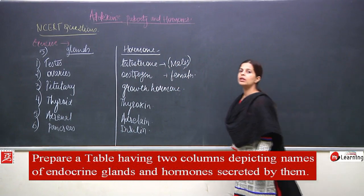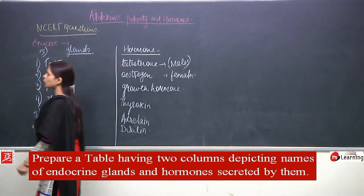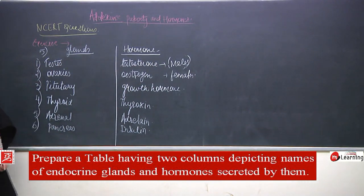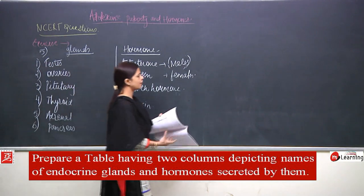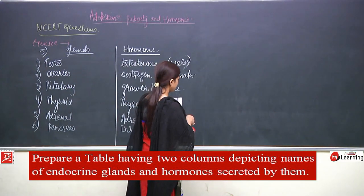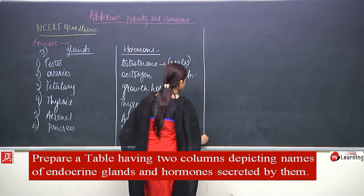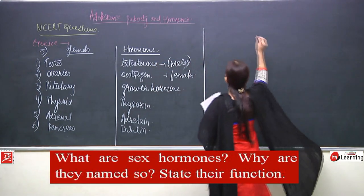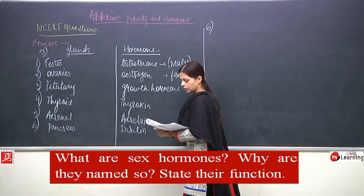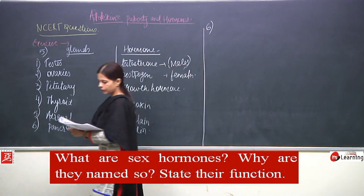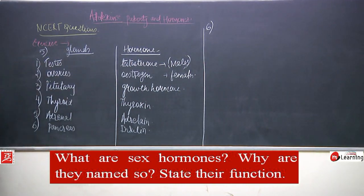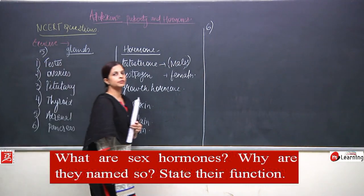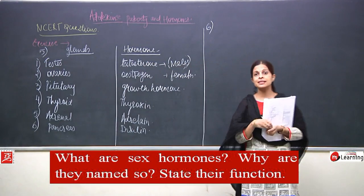This was question number five. Now we will be talking about question number six. I will just draw one line here. Question number six is: What are sex hormones? Why are they named so? State their function. So in one question they are asking about three things. We have just discussed this.